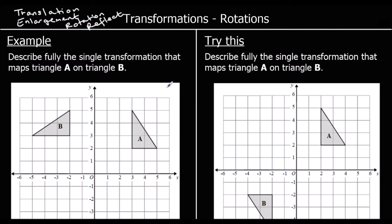We can see it's not a translation — it hasn't just been moved. It hasn't got bigger or smaller, so it's not an enlargement. And there's nowhere we can draw a mirror line to go from shape A to shape B, so it must be a rotation.